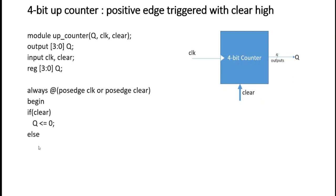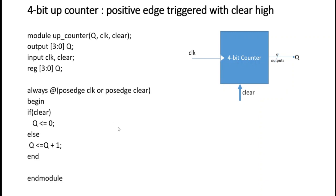In the else branch, we want the counter to start counting in ascending order. To do that we simply use the plus operator: Q = Q + 1. So if clear is high the counter resets to zero, otherwise the counter counts up in steps of one. This is the complete design for the up counter — very simple.